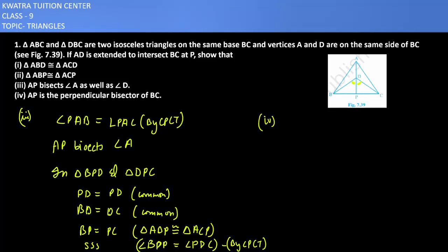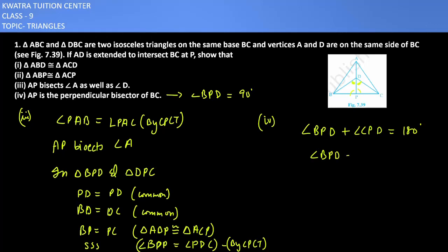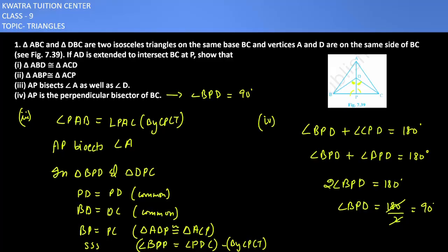In the fourth part, we show AP is the perpendicular bisector of BC. We need to prove that angle BPD equals 90 degrees. Since angle BPD plus angle CPD equals 180 degrees, and we have proved that angle BPD equals angle DPC by CPCT, we can write BPD plus BPD equals 180, which gives twice of BPD equals 180, so BPD equals 90 degrees. Therefore, AP is the perpendicular bisector of BC.